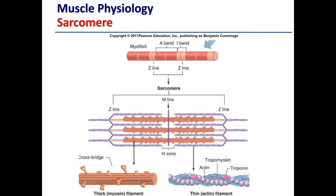This is a typical sarcomere structure. When we look at skeletal muscle under a microscope it has what we call a striated or stripy appearance. Looking at the myofibril, from Z-line to Z-line represents one sarcomere. You'll see areas of light and dark tissue, and this change between light and dark is because of the makeup of the protein filaments — both the thin and thick filaments — within the muscle fiber.